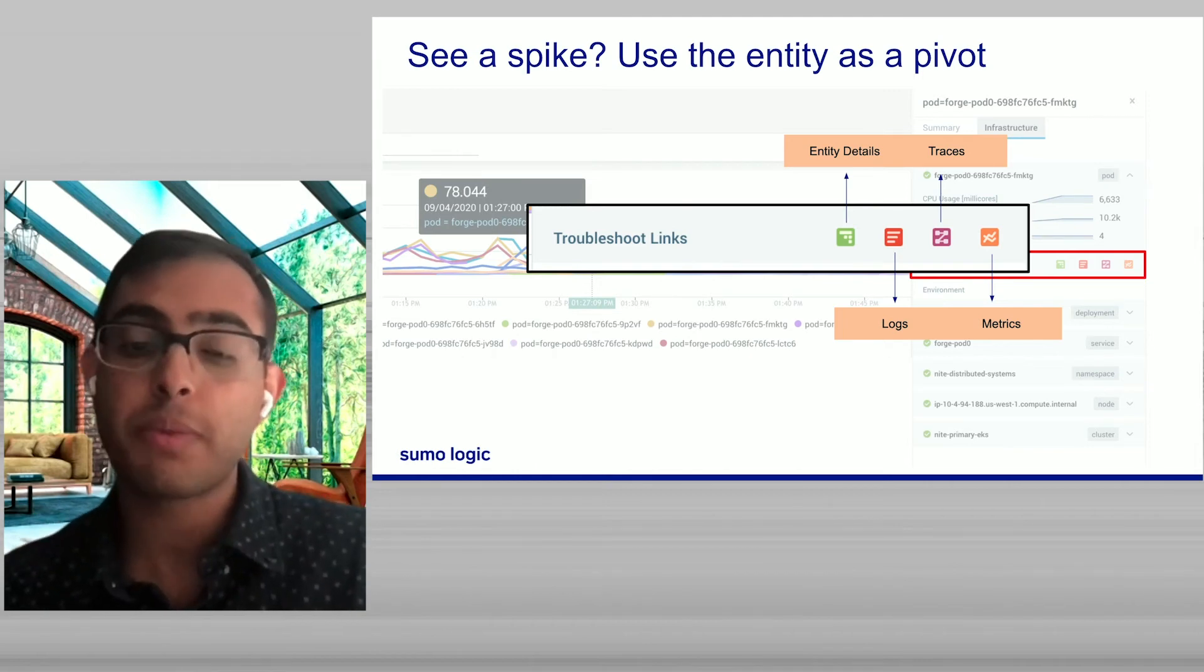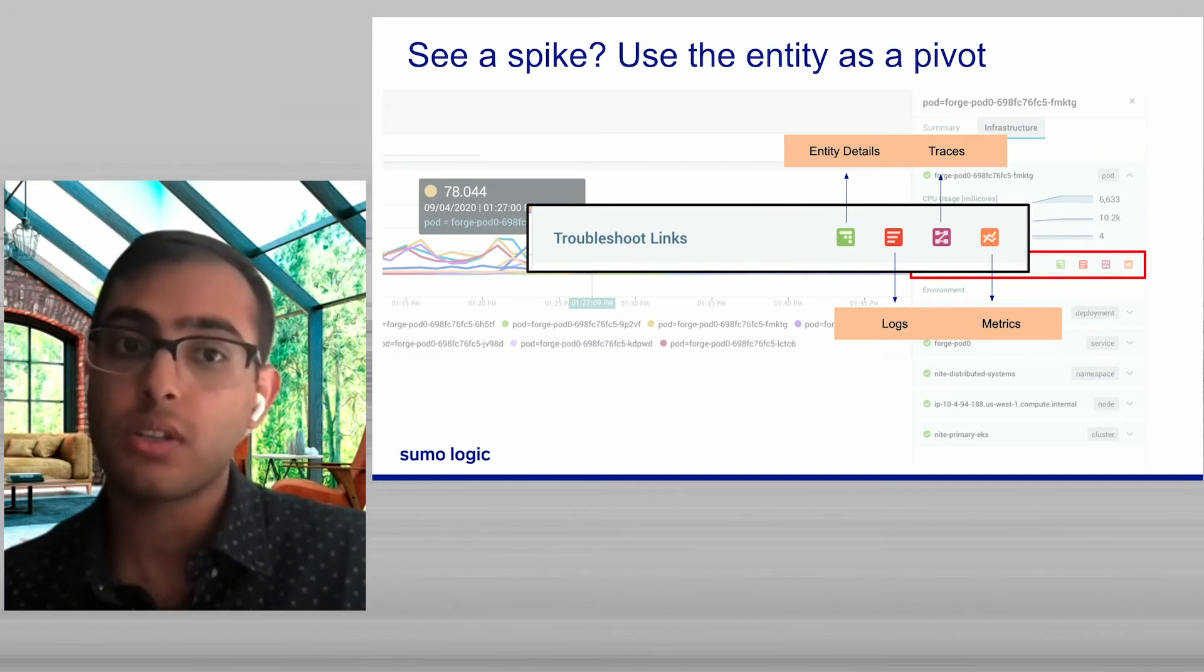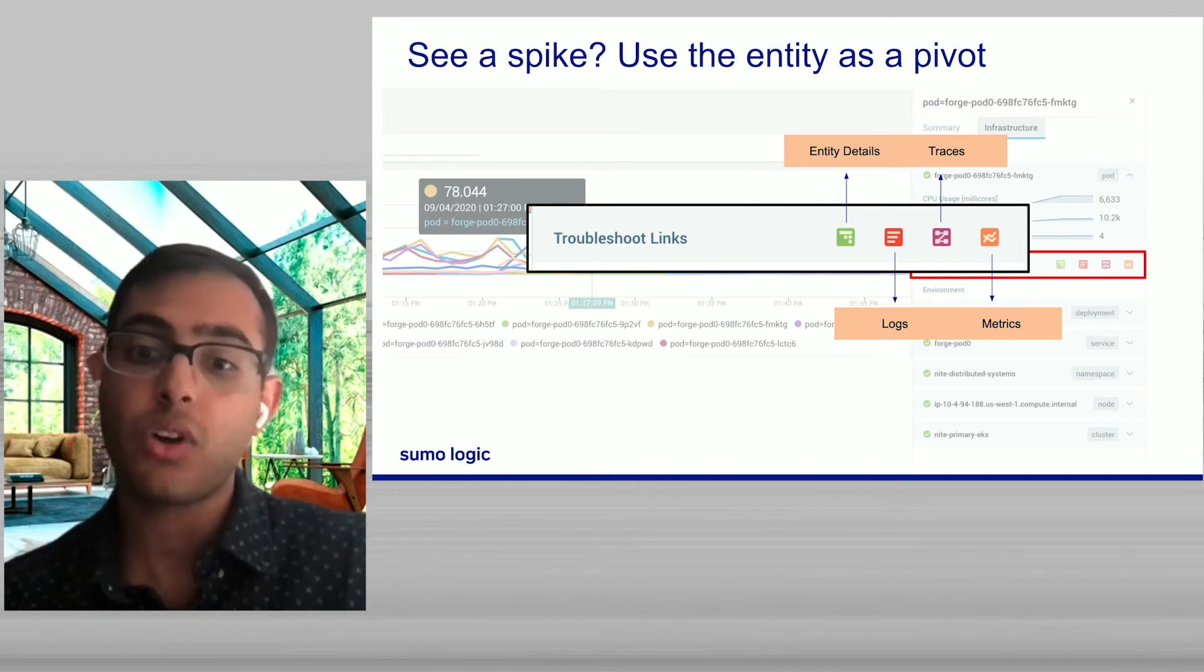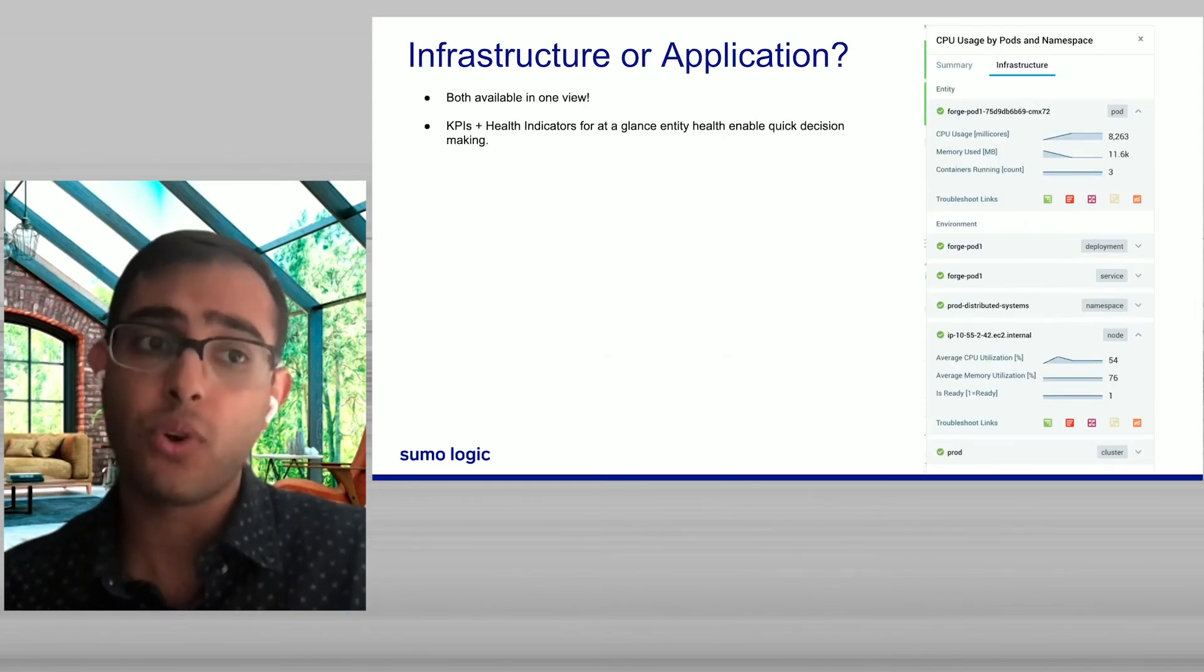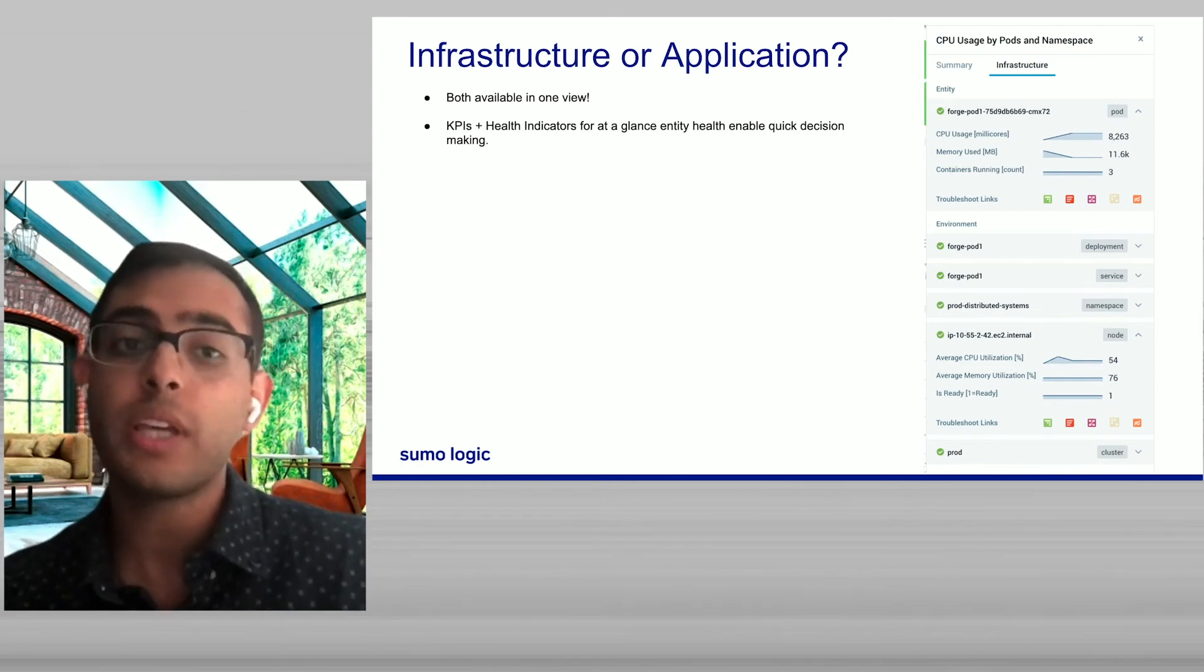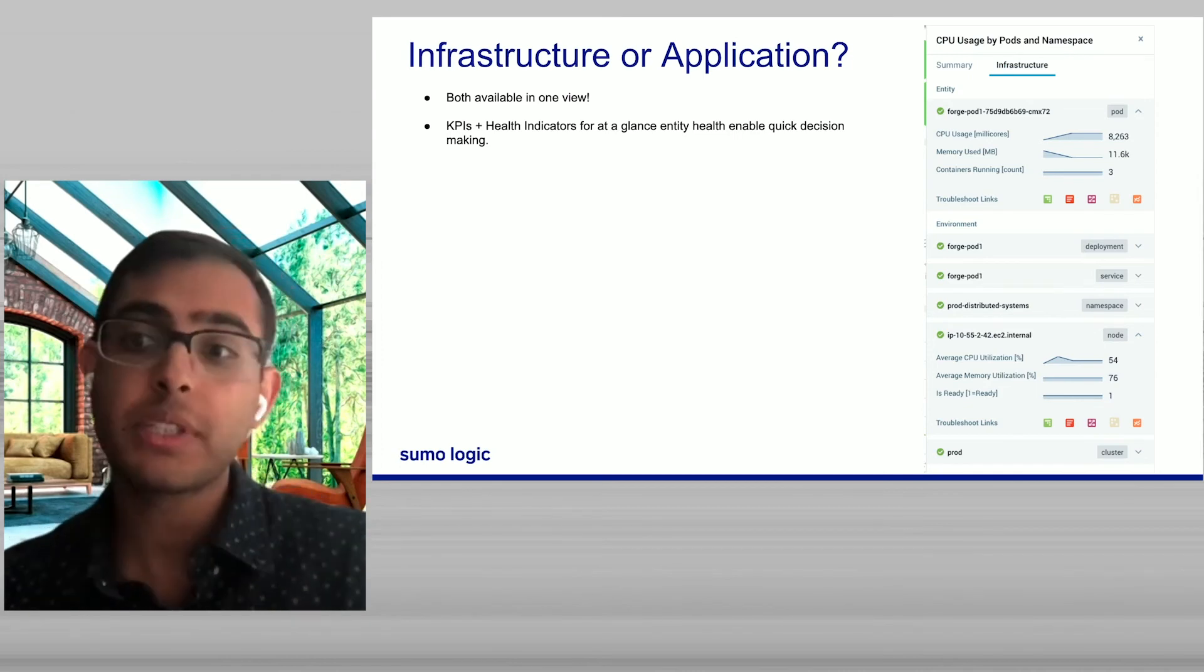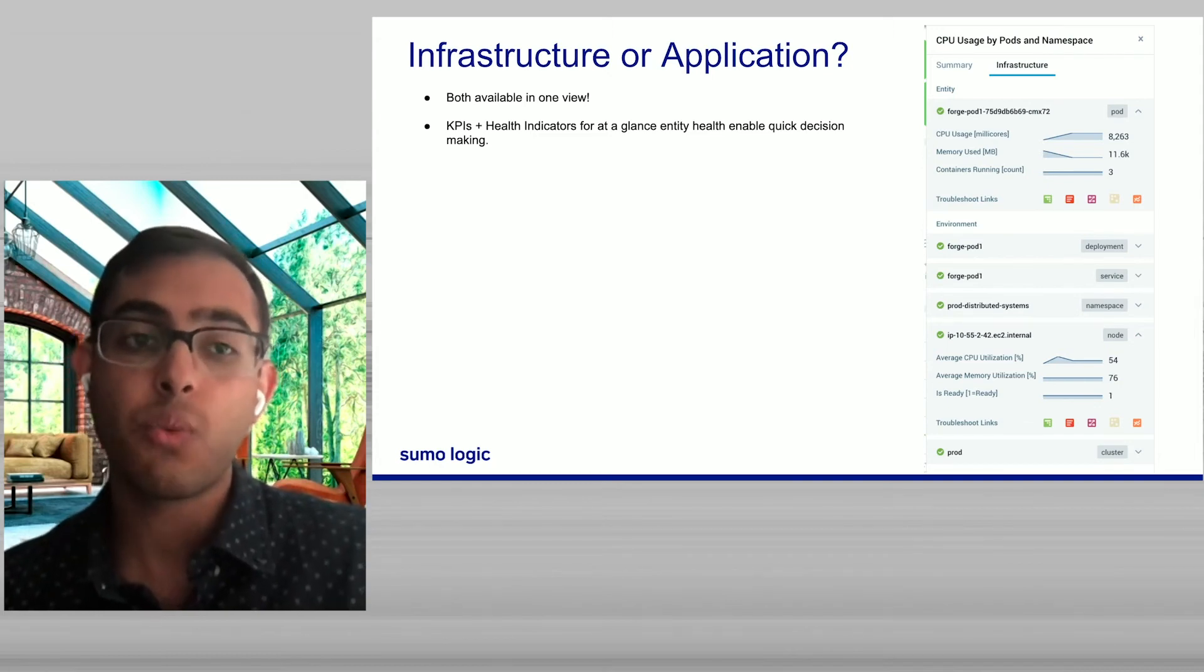Once I have the entity, I've got seamless pivoting capabilities across these data streams, enabling me to spend more time asking questions, driving towards answers, and less time translating across the different paradigms. A common question we were asking before, is it an infrastructure problem or is it an application problem? Once we know the entity behind a data point, we're able to actually produce for you the pod itself or the entity itself, along with the infrastructure it sits on, all in one view. And thanks to KPIs and health indicators, at a quick glance, we can help you highlight where the problem might sit.